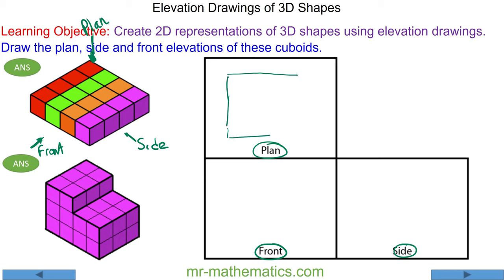As we work our way from left to right we can see a red, green, orange and purple column. Now the front is directly in line with the plan in that it's as wide as the plan view.